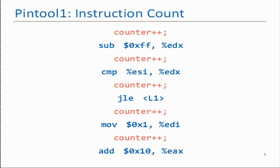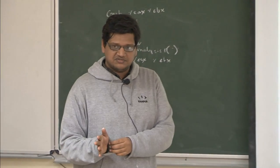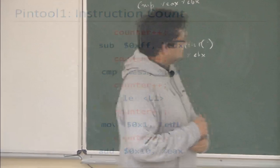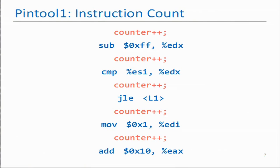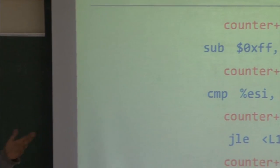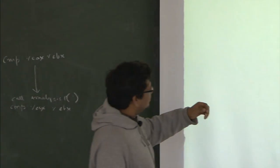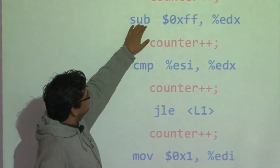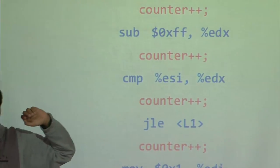Let's look at a PIN tool that counts the number of instructions executed. We want to insert a counter increment before each instruction — so whenever an instruction is about to execute, the counter is incremented, allowing us to track the total number of instructions executed.